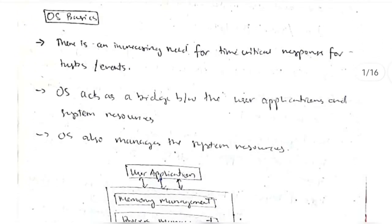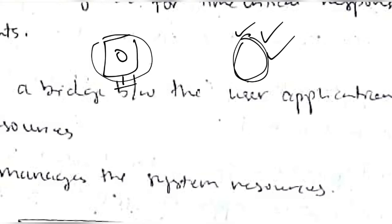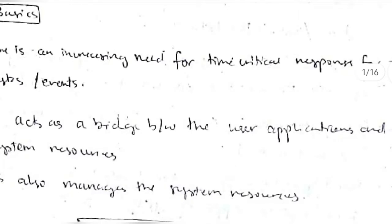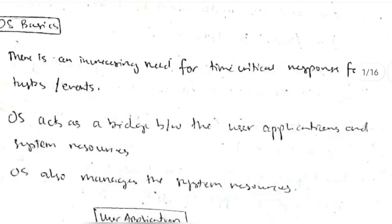Let's discuss Operating System basics. System resources include the CPU, storage, memory, and all. Applications run on the computer. In between the data, CPU time, and the applications, we have the Operating System. There is an increasing need for time-critical response for tasks and events — time-critical means we need outputs quickly. The OS acts as a bridge between the user application and system resources, making outputs faster.